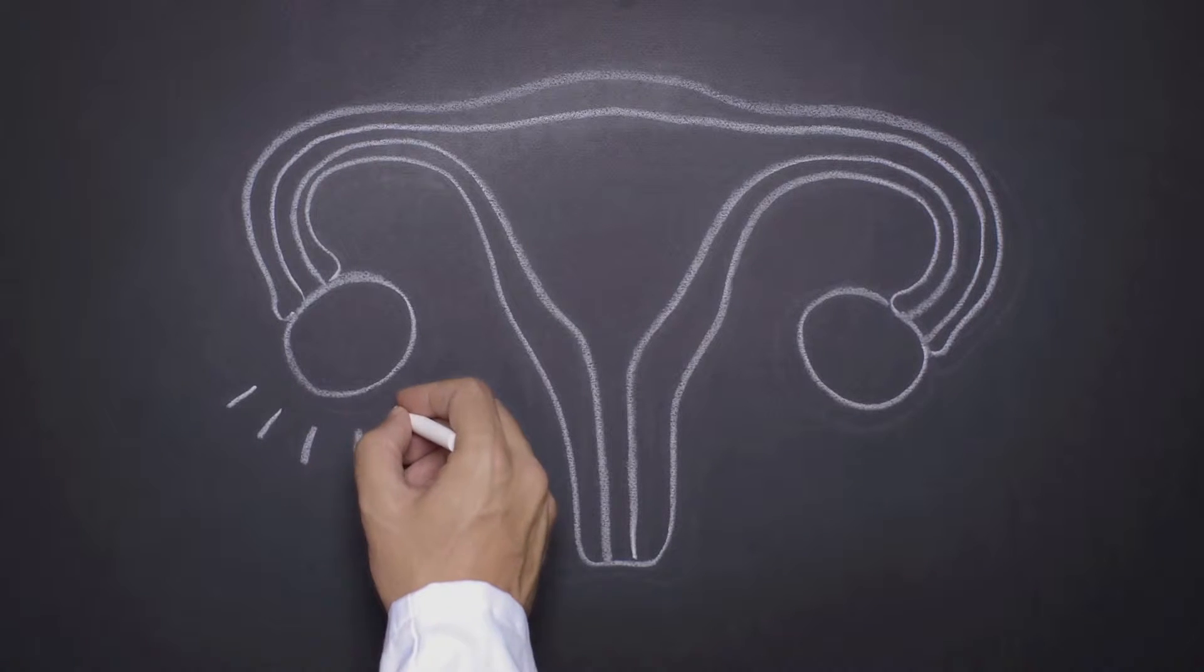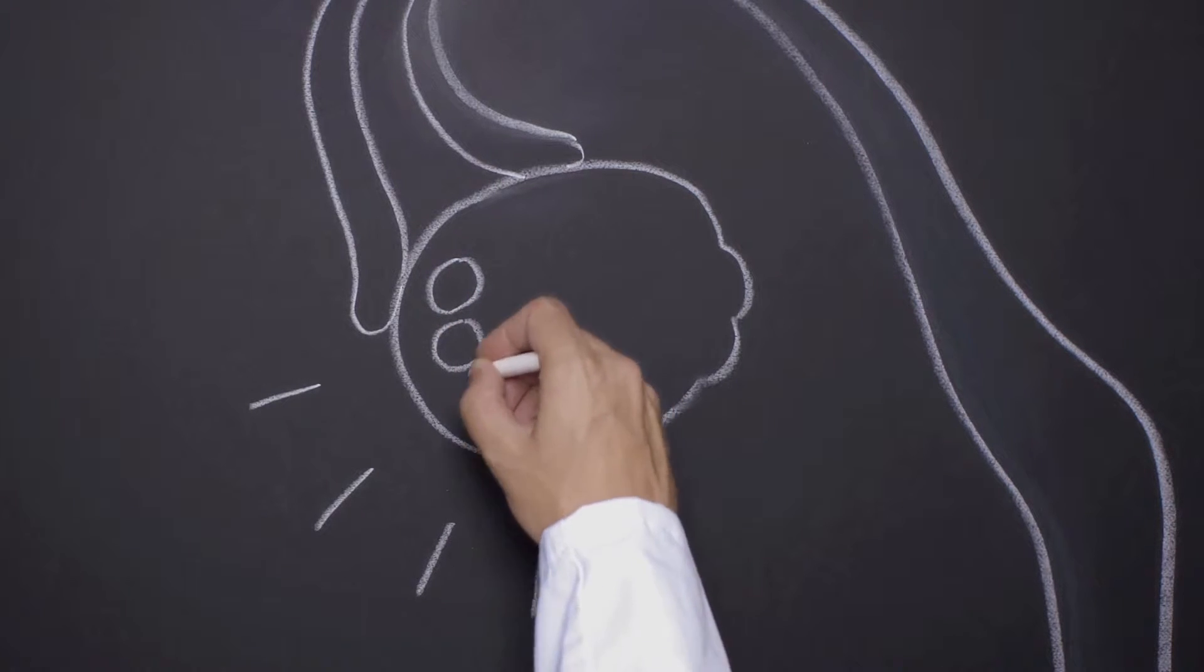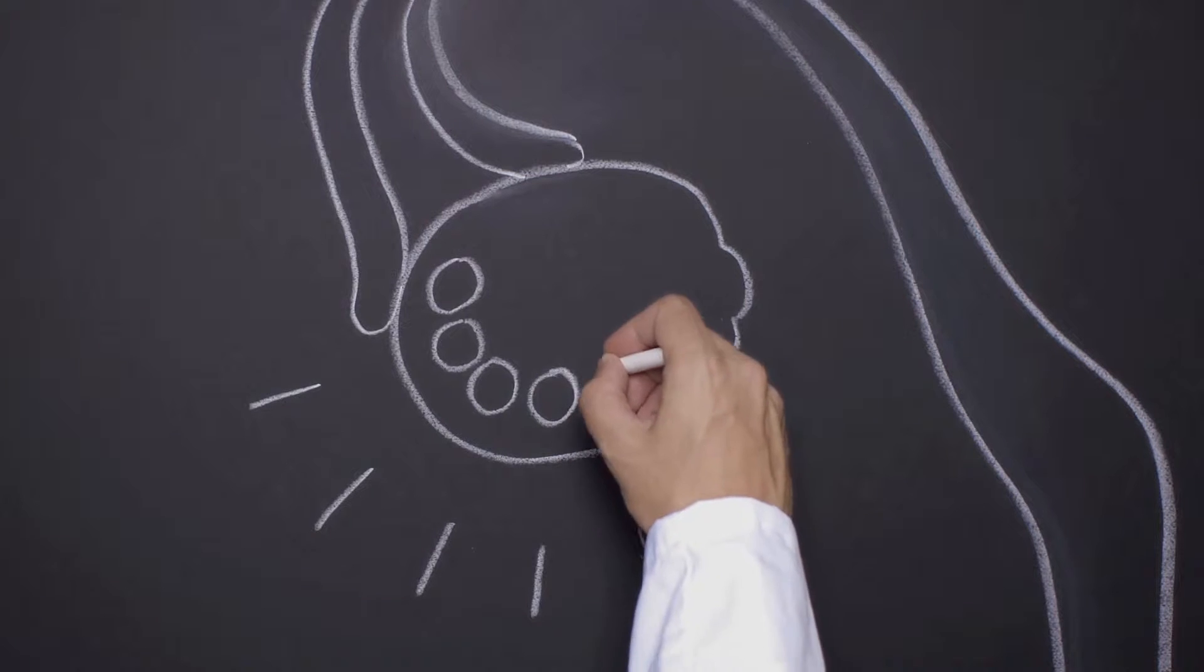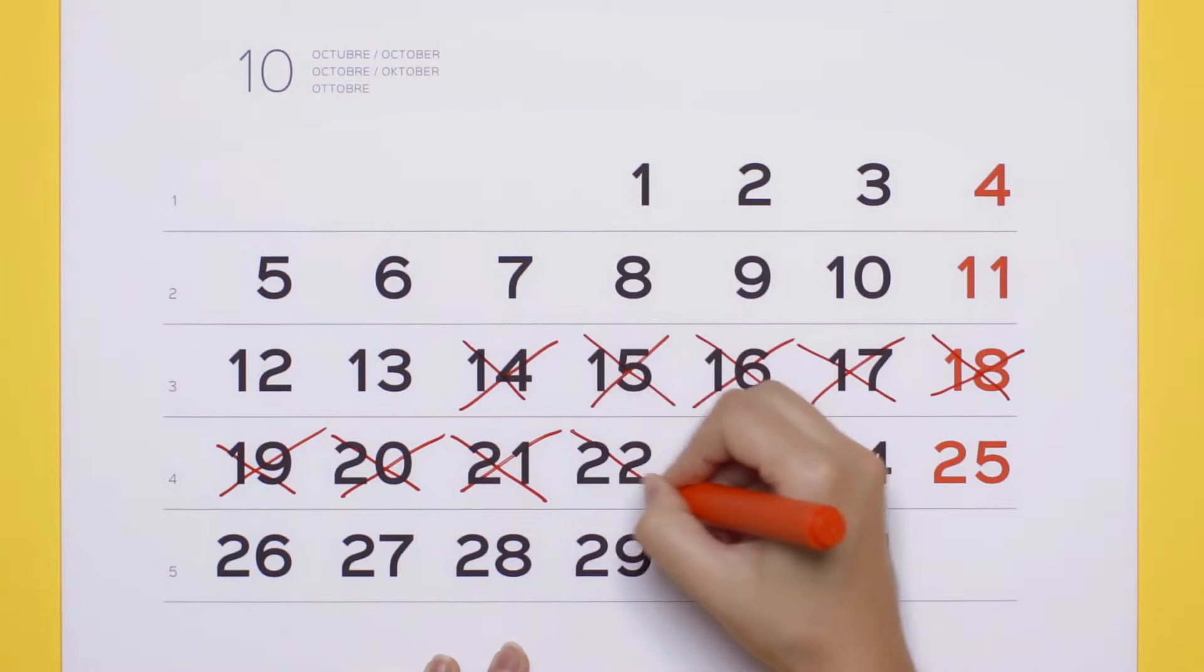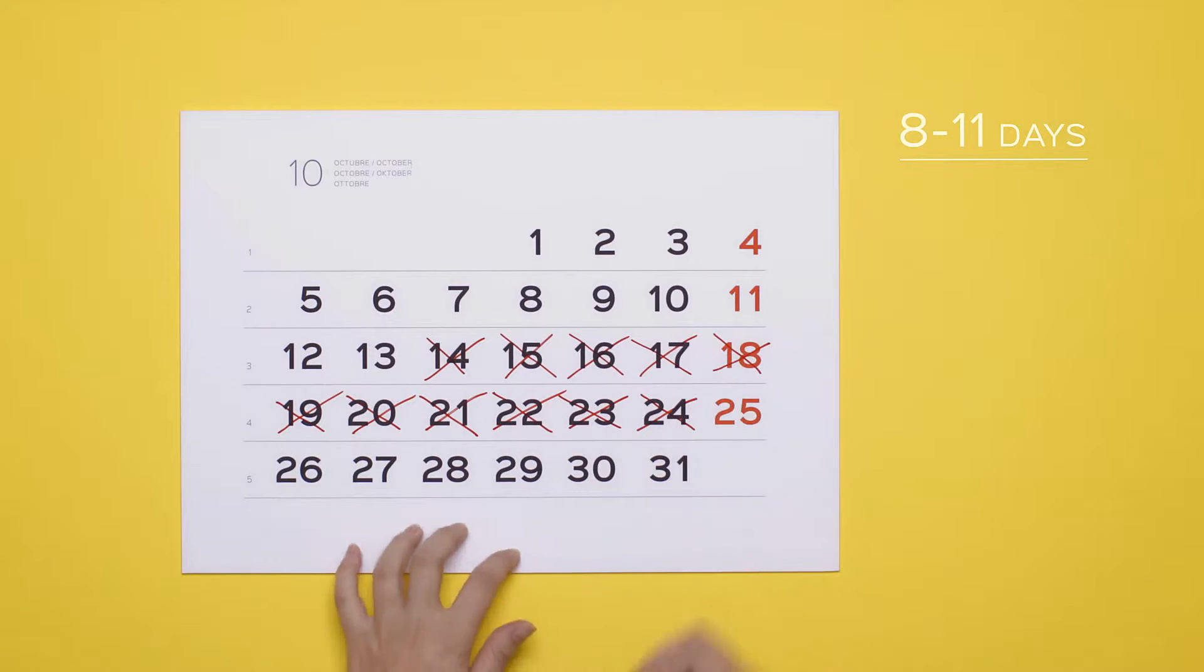The aim is to make the ovaries produce follicles from which the ova are obtained to carry out in vitro fertilization. The treatment begins in the first days of menstruation and lasts between 8 and 11 days.